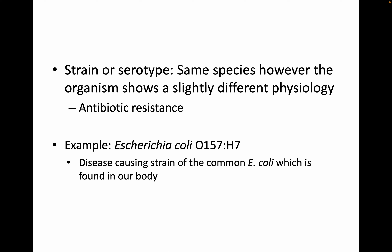In microbiology, sometimes we further divide things by strain or serotype. These are organisms of the same species that show slightly different traits like antibiotic resistance. For example, Escherichia coli O157:H7 is a disease-causing strain of the common E. coli found in our bodies.